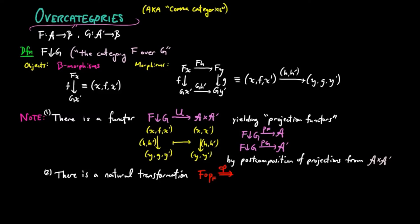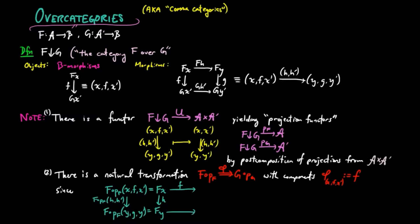Also note that there is a natural transformation phi from fp lower script f to gp lower script g, with components phi xfx prime defined to be the b-morphism f. We see that this indeed gives us a natural transformation by the definition of an f over g-morphism.